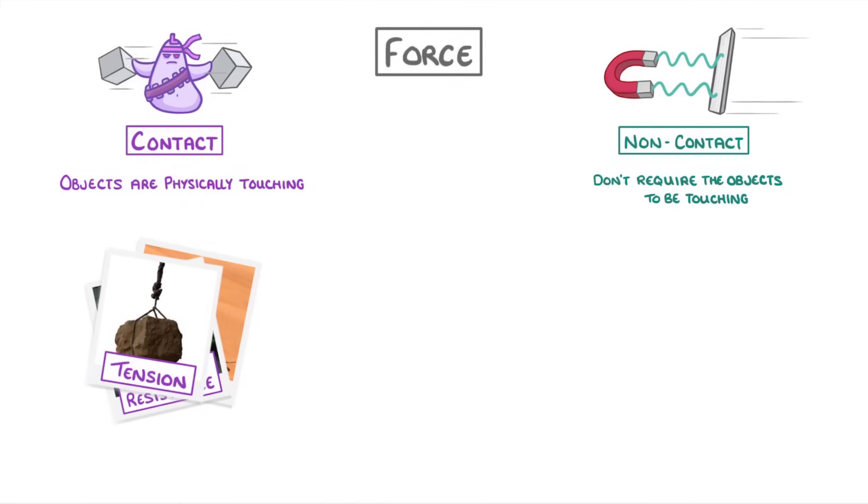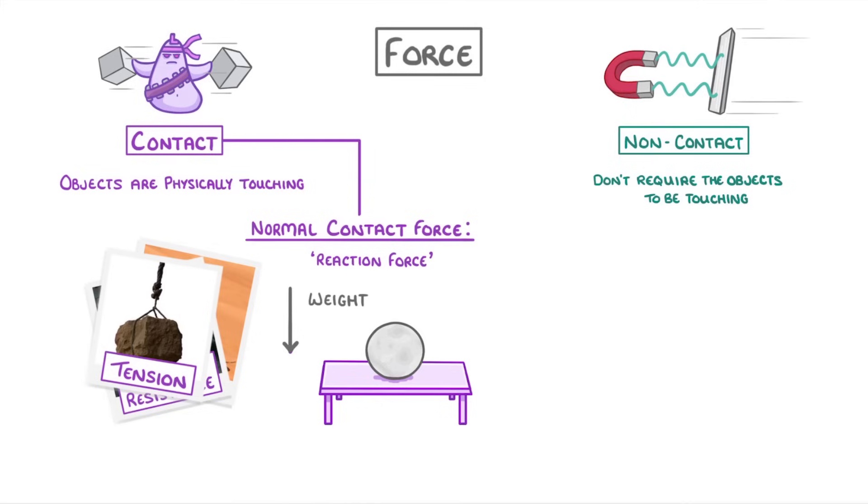The last contact force to know is the normal contact force, which is also sometimes known as the reaction force. In this picture, we can see a rock on a table, and because the rock has mass, it will be exerting a force downwards, which is its weight. To keep it in position though, and stop it from falling, the table must be exerting an equal and opposite force upwards. And it's this force that we call the normal contact force.